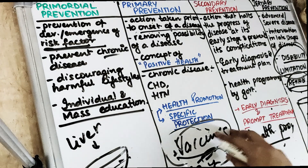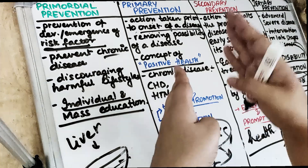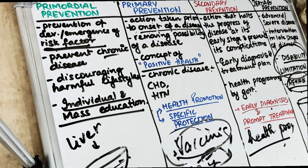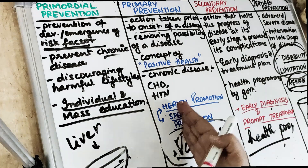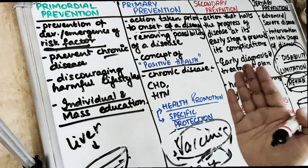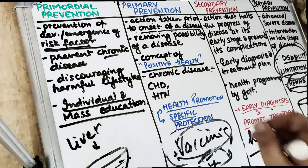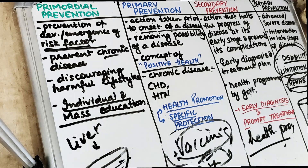Mouth guards for sports persons are also a level of prevention. Daily tooth brushing is a primary level of prevention because you are preventing all diseases related to plaque and calculus. Supervising school brushing programs also comes under primary prevention.